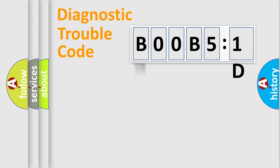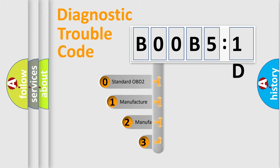Powertrain, Body, Chassis, Network. This distribution is defined in the first character code.